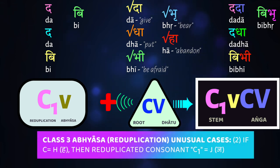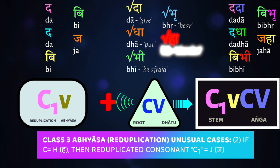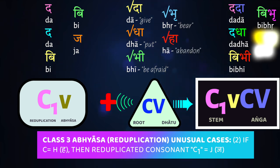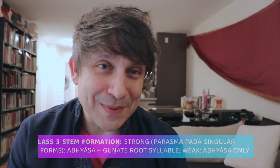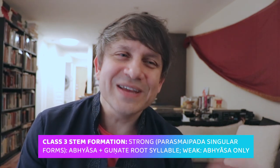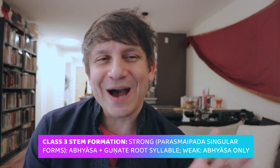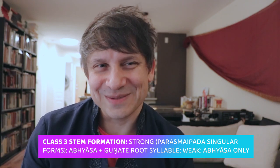Another common feature of abhyasa is that if the initial consonant is a velar (k-varga), it reduces to a palatal. In particular, the velar voiced aspirate gh becomes the voiced palatal j. So ha, meaning 'to abandon,' reduplicates as jha, and hu reduplicates as jhu. With these basic ideas about reduplication in mind, we can now turn to looking at how to get from root to stem in the conjugation of Class 3 verbs.